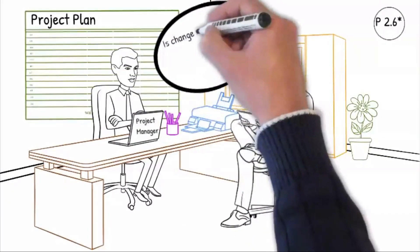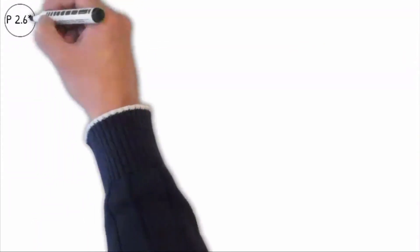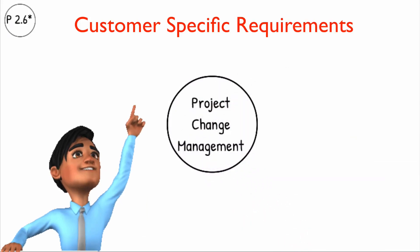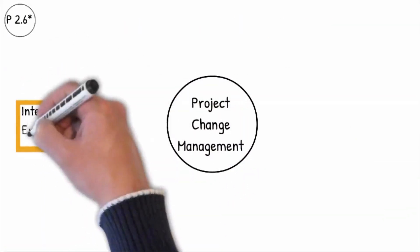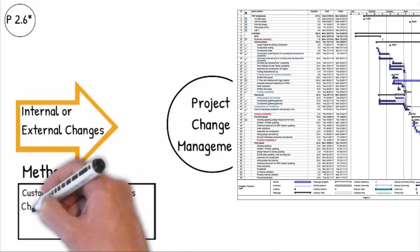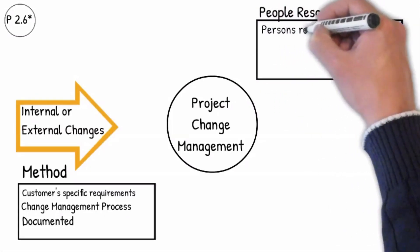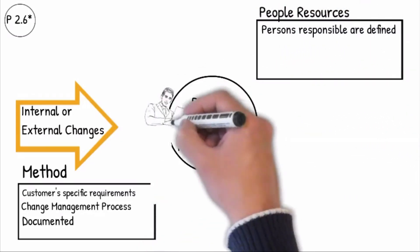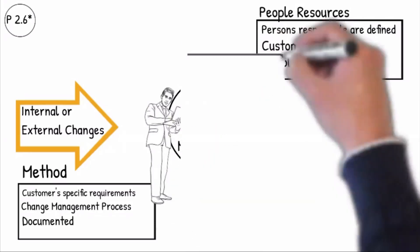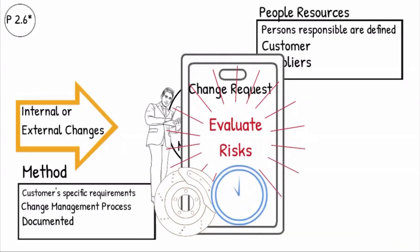Question P2.6: Is change management within the project ensured by the project organization? Change management within the project meets the customer-specific requirements. All changes — initiated internally, by the supplier, or by the customer — must be evaluated, and if necessary the project plan must be adapted and documented according to customer requirements. The persons responsible for change management are defined for the customer, internally and to suppliers. All changes must be evaluated and must include the risk assessment for the product quality as well as ensuring that deadlines will be achieved.